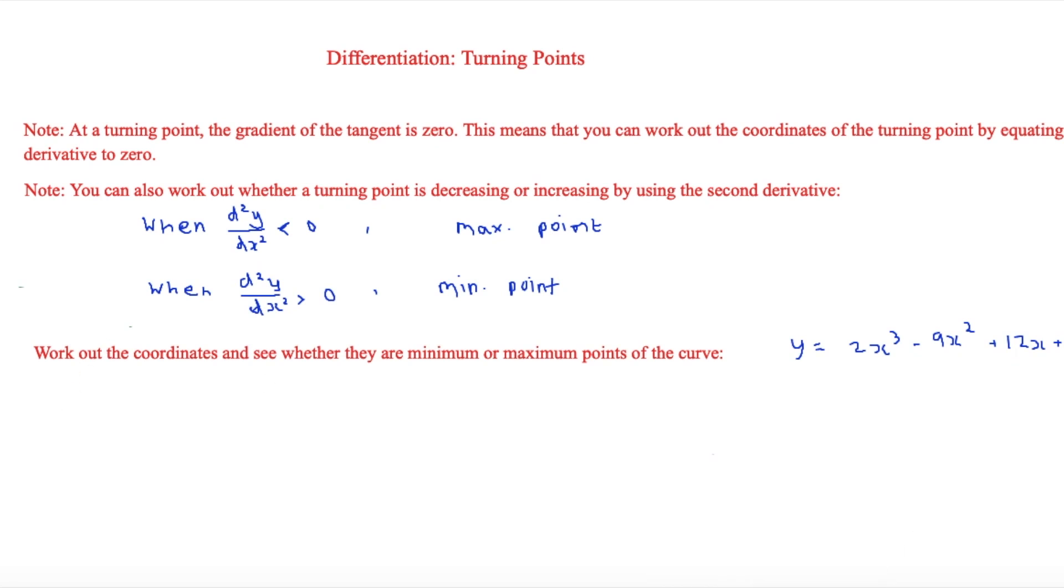To show how this comes in when we're doing the question, we will now do one of these questions. This is asking to work out the coordinates and see whether they are minimum or maximum points of the curve y = 2x³ - 9x² + 12x + 7.